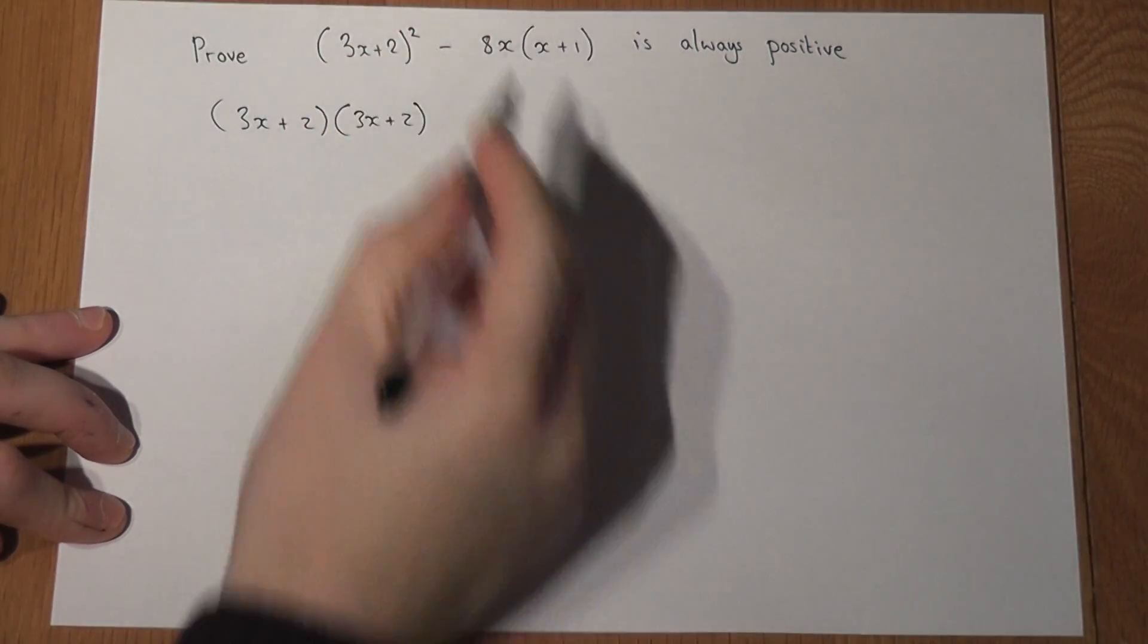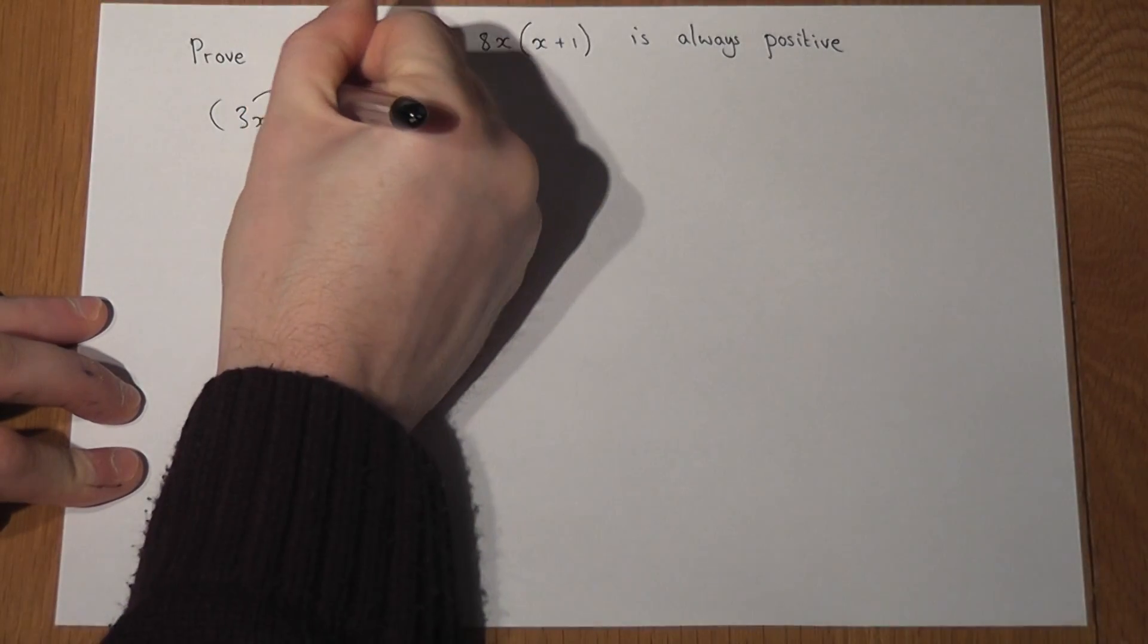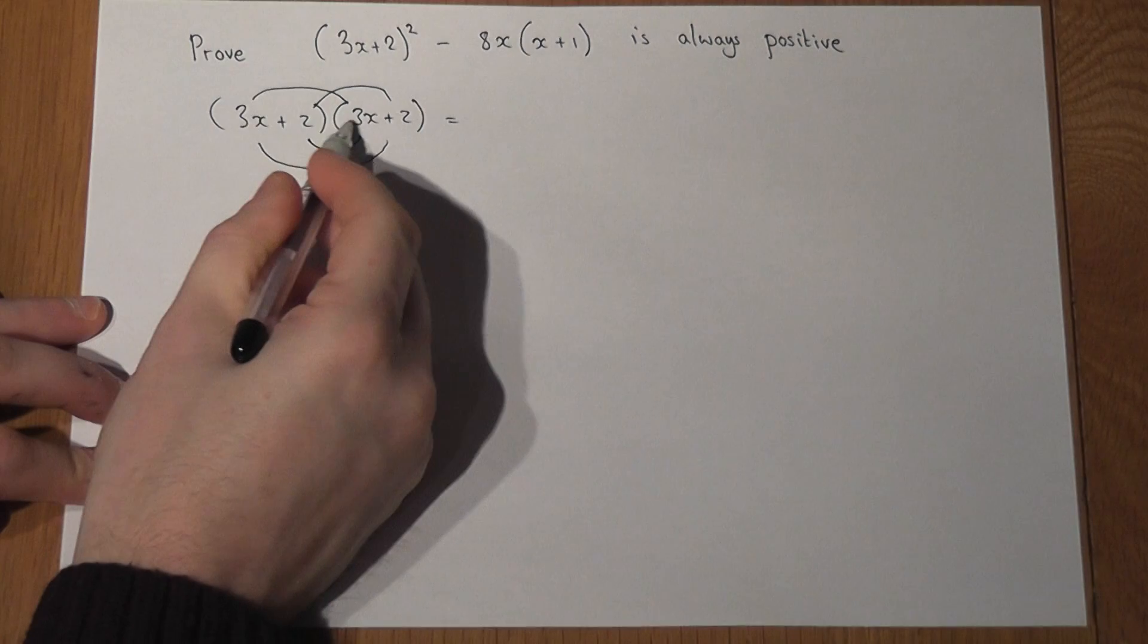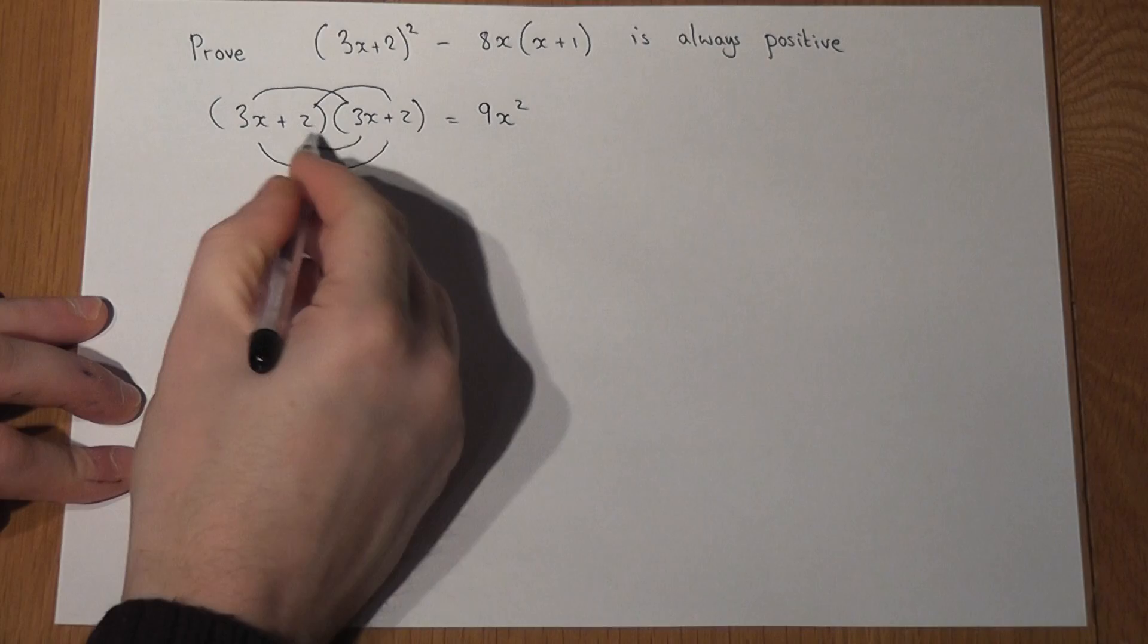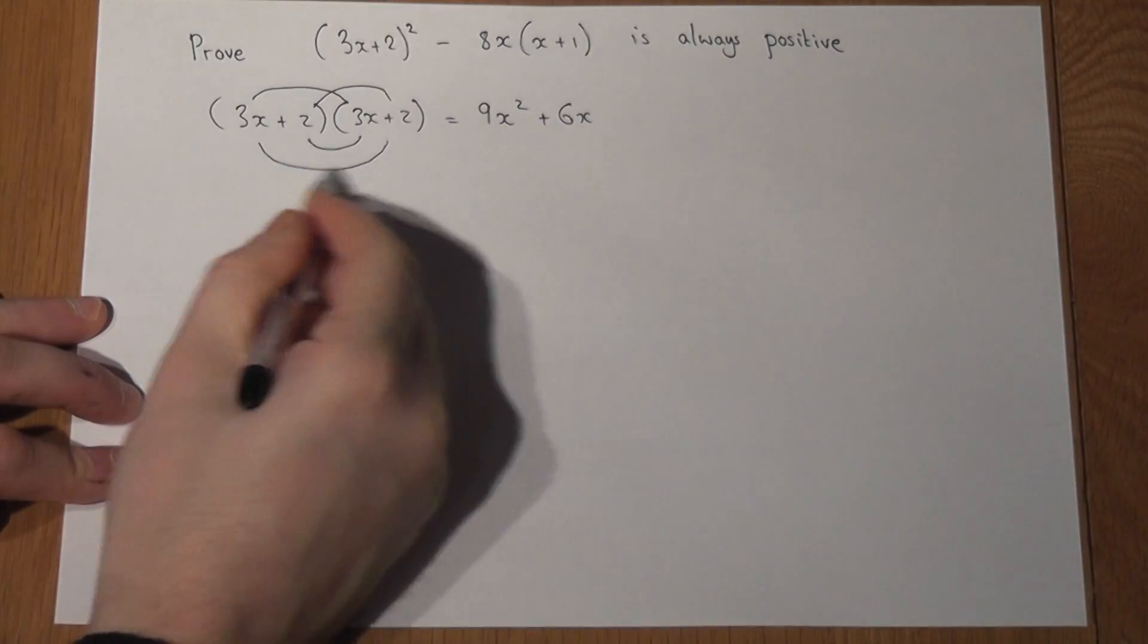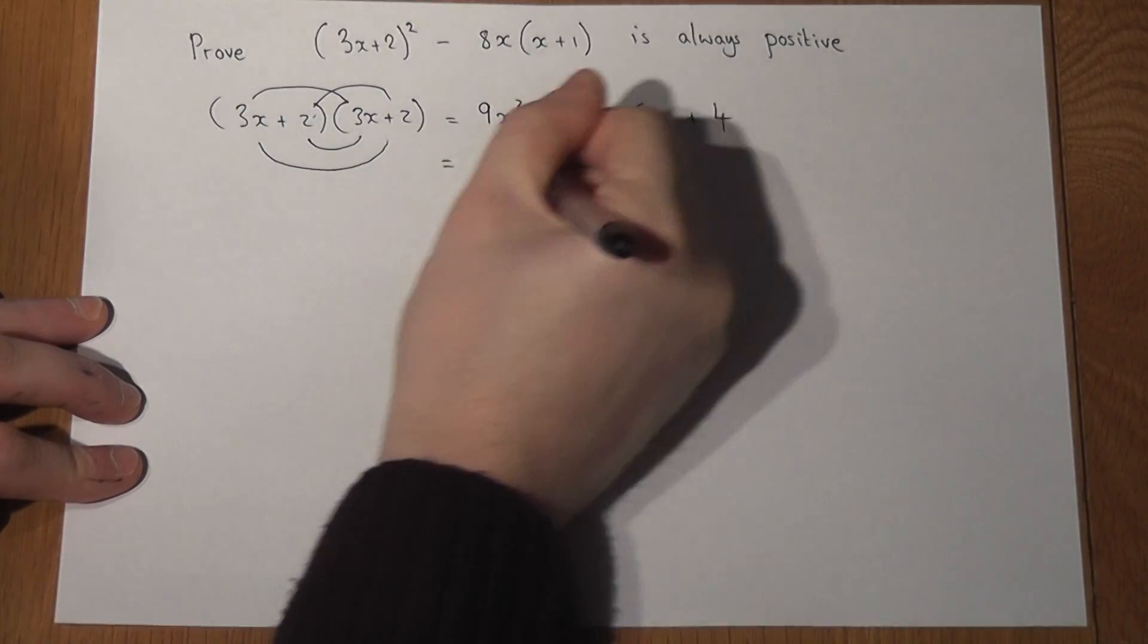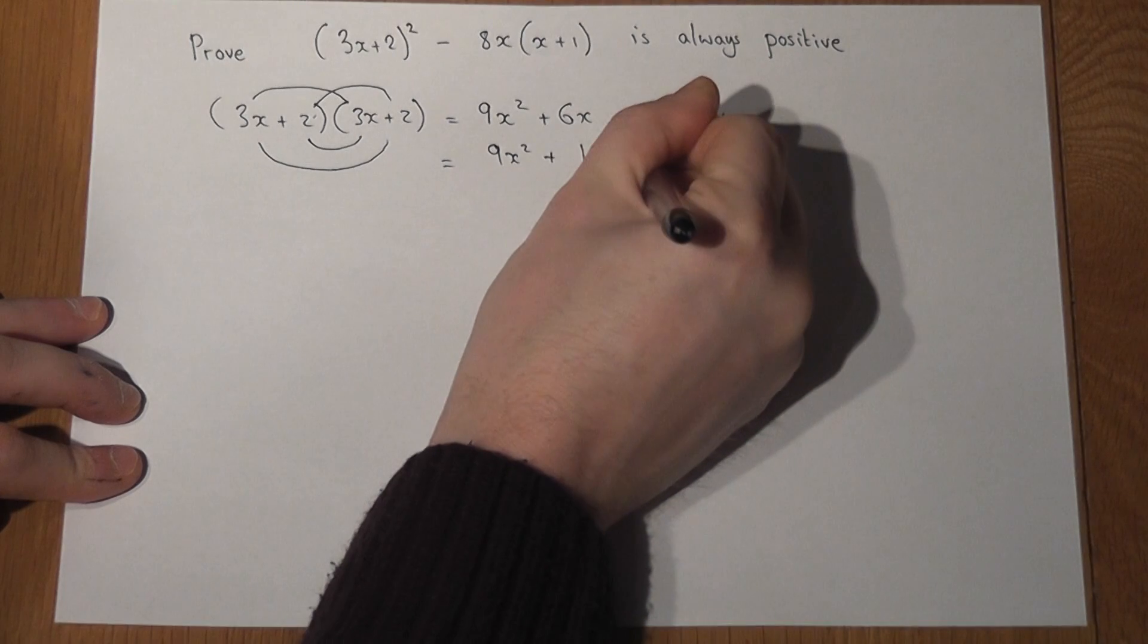Now don't forget the squared means two brackets times together. So to expand this, 3x times 3x is 9x squared. 2 times 3x is 6x. 3x times 2 is 6x and 2 times 2 is 4. So this becomes 9x squared plus 12x plus 4.